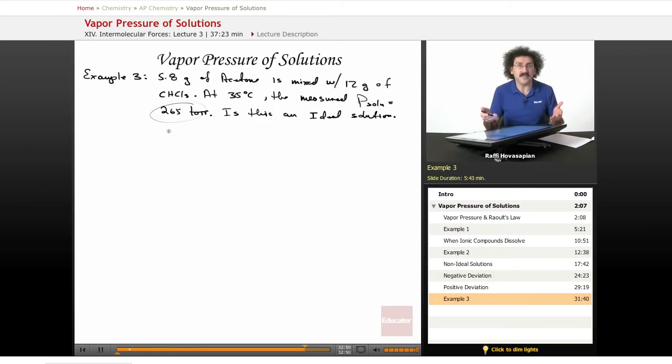If it's lower than that, it's negative deviation. If it's higher than that, it's positive deviation. In either case, it's a non-ideal solution. If it's close to 265, in the 260 to 270 range, it's an ideal solution. So,